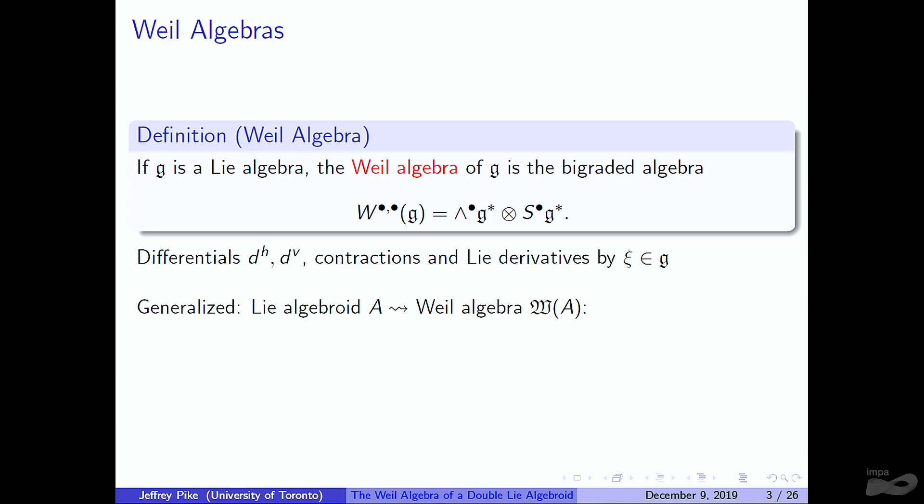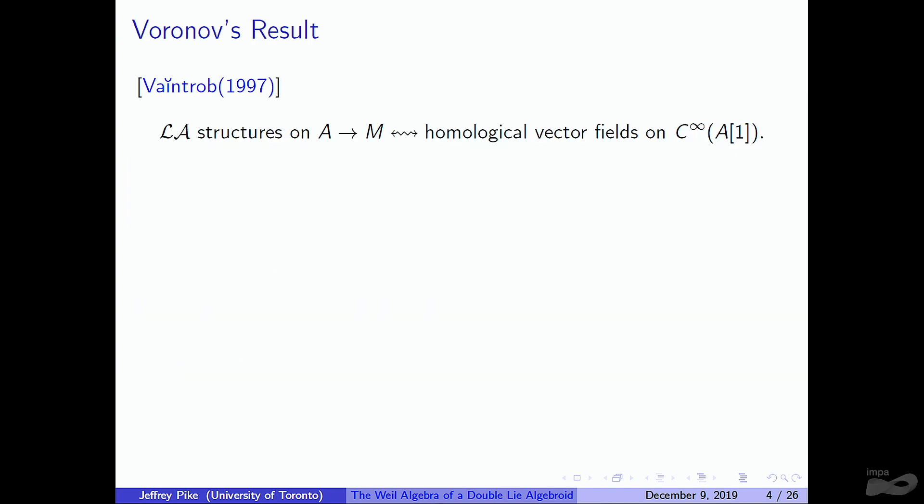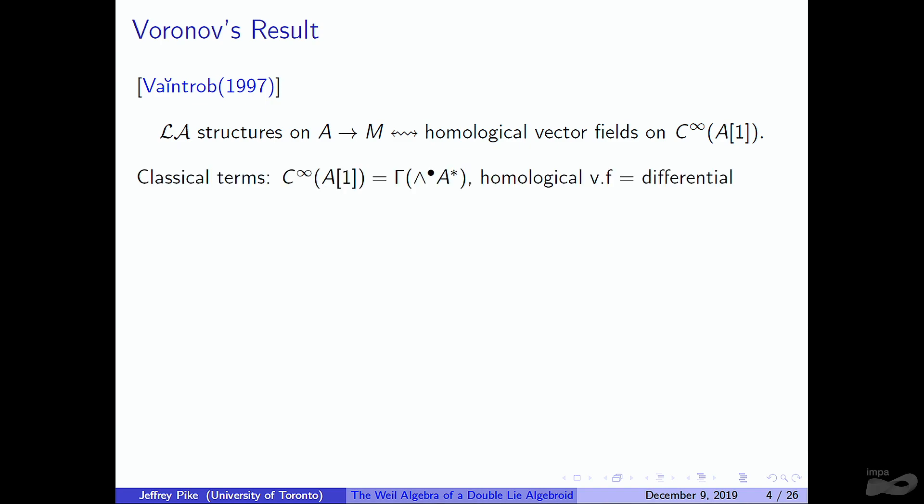To tell a slightly different story: when we study Lie algebroids, it was shown by Vaintrob that these are the same thing as looking at homological vector fields on a certain space. A[1] is a supermanifold associated to any vector bundle, and its sheaf of functions carries the structure such that Lie algebroid structures on the vector bundle are basically equivalent to homological vector fields. In more classical terms, this is essentially the Chevalley-Eilenberg complex — differentials on that complex are the same thing as Lie algebroid structures on the vector bundle.